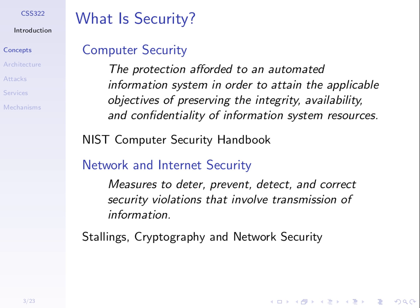The protection afforded to an automated information system in order to attain the applicable objectives of preserving integrity, availability, and confidentiality of information system resources. Think of a computer system — whether it's one computer or many computers connected together. We want to protect it to preserve integrity, availability, and confidentiality. We'll define those three objectives on the next slide.